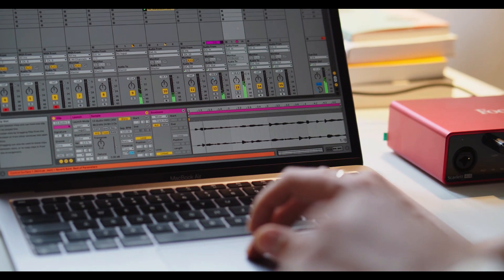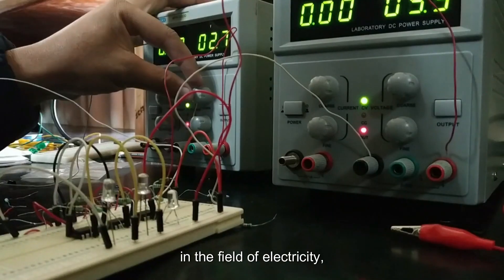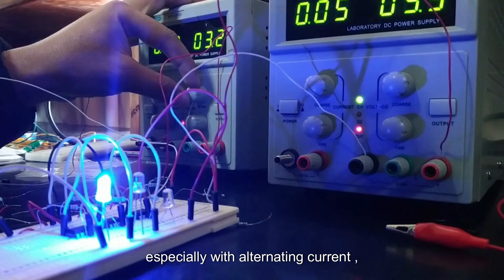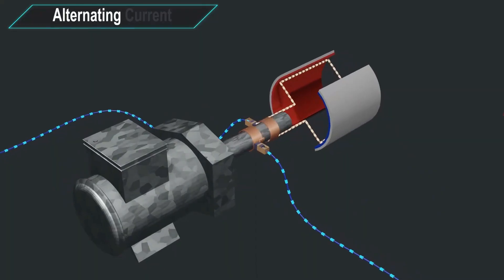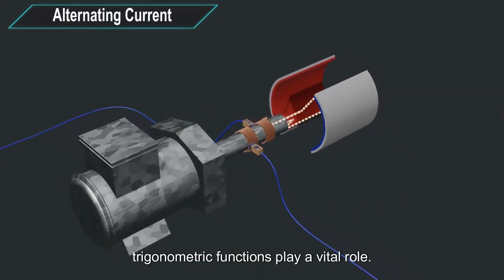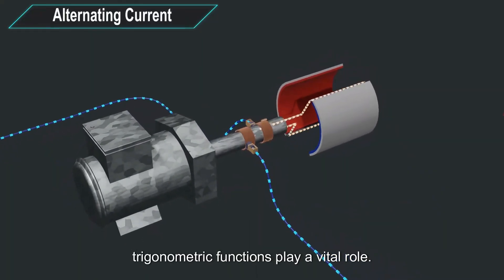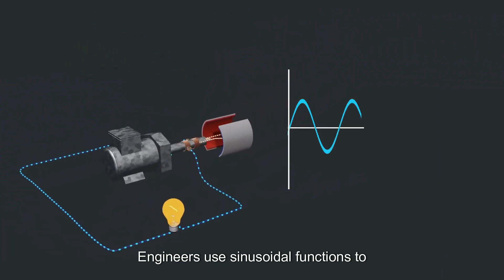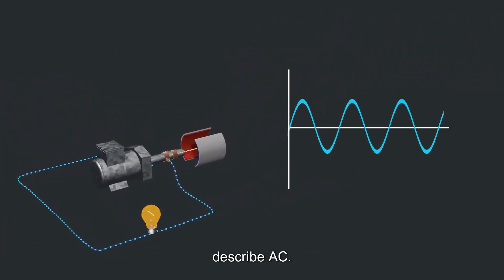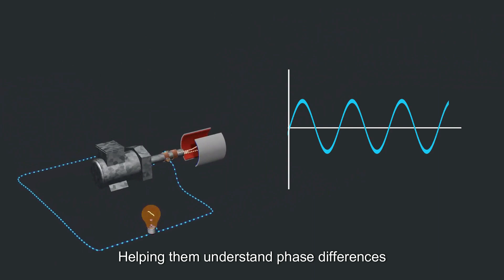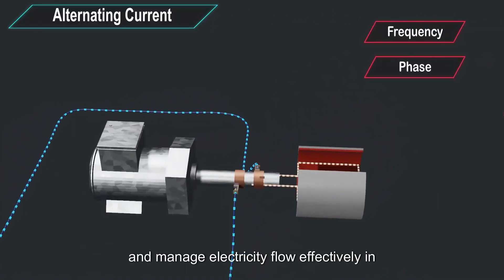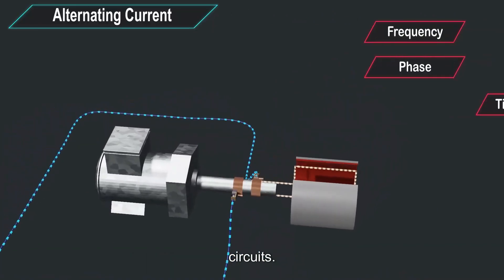Lastly, in the field of electricity, especially with alternating current (AC), trigonometric functions play a vital role. Engineers use sinusoidal functions to describe AC, helping them understand phase differences and manage electricity flow effectively in circuits.